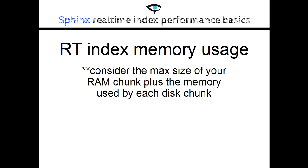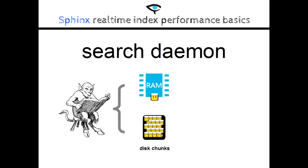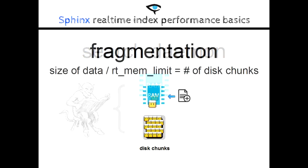Searching a real-time index is similar to a single core search on multiple plain indexes. As of this moment, the RT-Index will only use one core per search, no matter how many disk chunks it has, and this may change in the future. This means the Sphinx daemon will need to hit more files on disk than in a normal plain index, which means more I/O. Searchd then needs to merge all results from all the chunks, which translates, in the end, to lower search speeds. And this is RT-Index fragmentation.